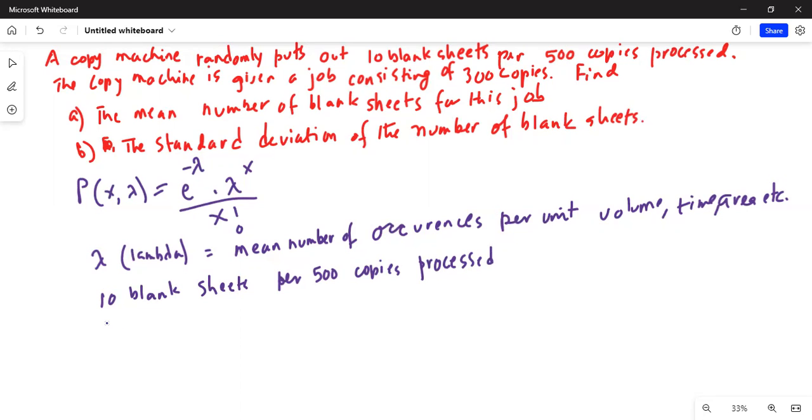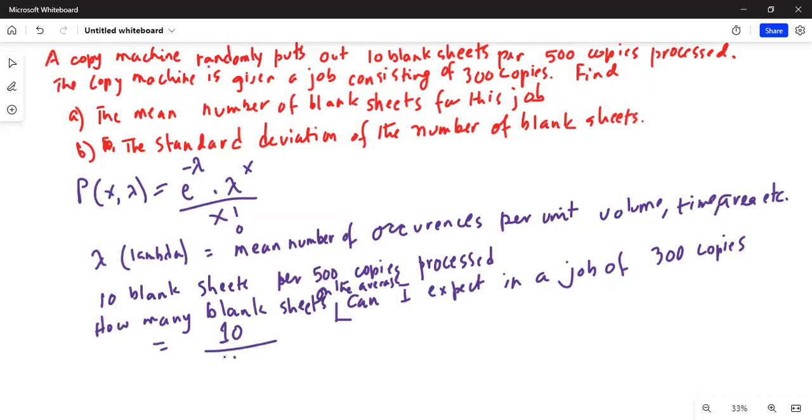How many blank sheets can I expect? How many blank sheets, I should say on average, can I expect in a job of 300 pages, 300 copies? That will be equal to 10 blank sheets for 500 copies produced, and my job size is 300. So it will be equal to 10 divided by 5 multiplied by 3, which is 2 times 3 is 6.